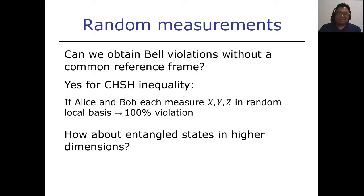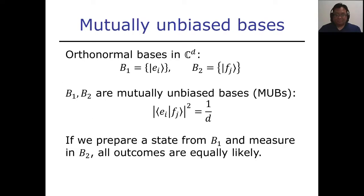Here we want to ask what happens if you do the same kind of random measurements for entangled states in higher dimensions. We say that two bases B1 and B2 are mutually unbiased if taking the inner product squared of one vector from the first basis and another vector from the other basis will give you 1 over d. So one way to think about this is if you prepare some quantum state as one of the states in the first basis, but then you perform the measurement in the second basis, then you get the uniform distribution.